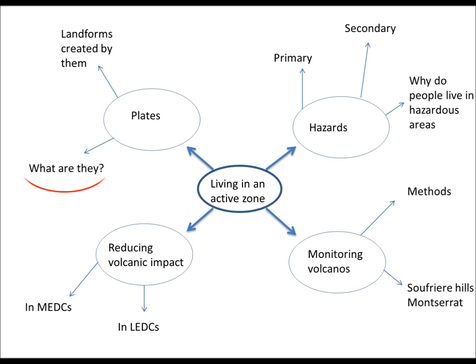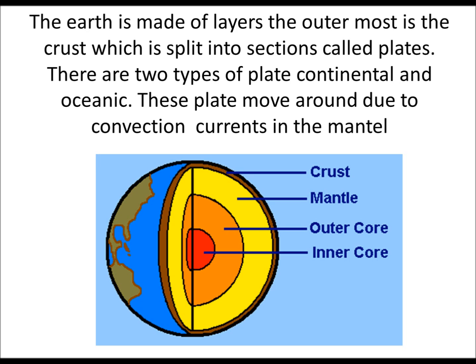What are plates? The earth is made of layers. The outermost layer is the crust, and this is split into sections called plates. There are two types of plates: continental and oceanic. These plates move around due to convection currents in the mantle, which is the yellow layer on the diagram below.